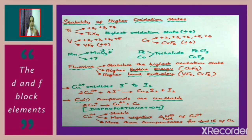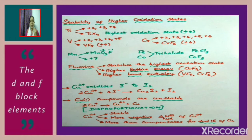Consider titanium — the different oxidation states possible for titanium are +2, +3, and +4. The highest oxidation state is +4, which titanium exhibits in titanium tetrahalides. For vanadium, the possible oxidation states are +2, +3, +4, and +5, with the highest (+5) exhibited in vanadium pentafluoride. For chromium, the states are +2 through +6, with the highest (+6) exhibited in chromium hexafluoride.